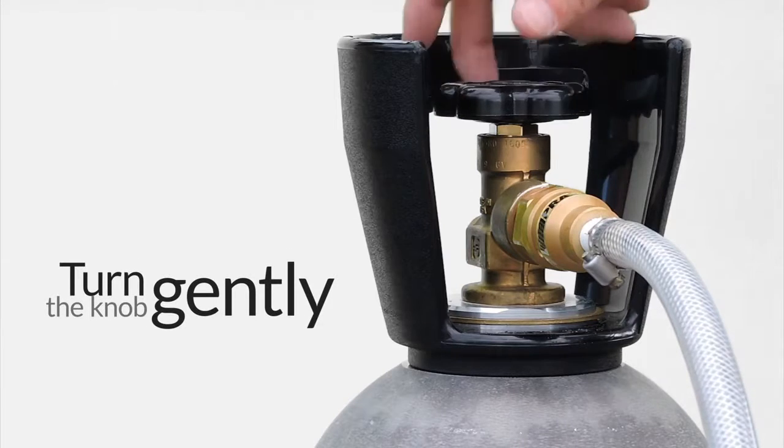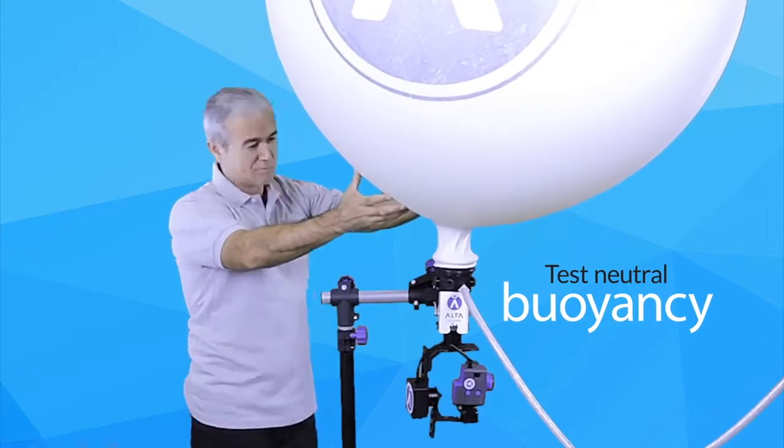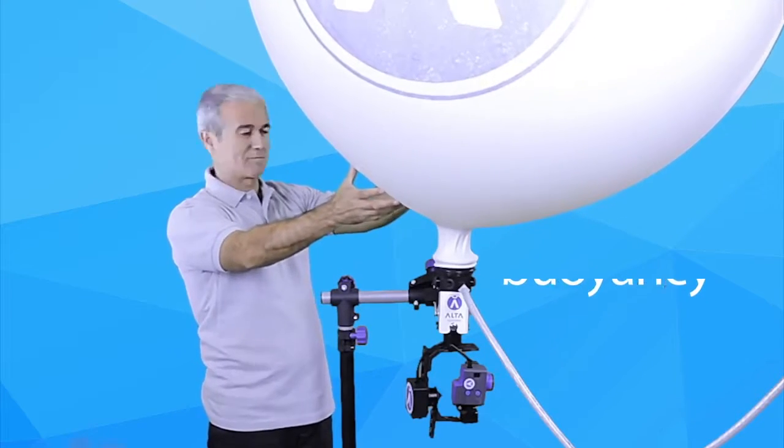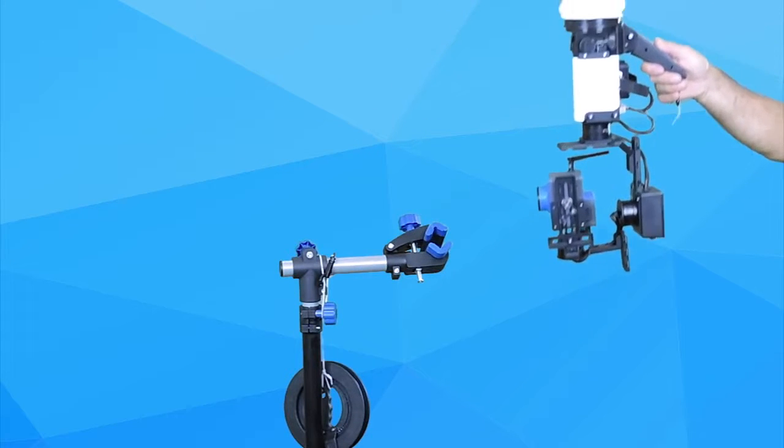Turn the tank knob gently until you reach the desired gas flow. Inflate the inner balloon until the system reaches neutral buoyancy. To test neutral buoyancy, hold the balloon by the handle and gently release it.